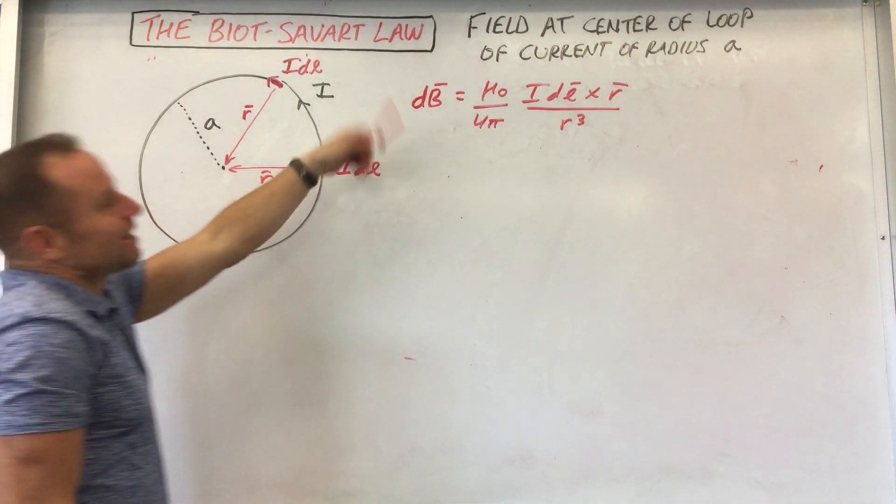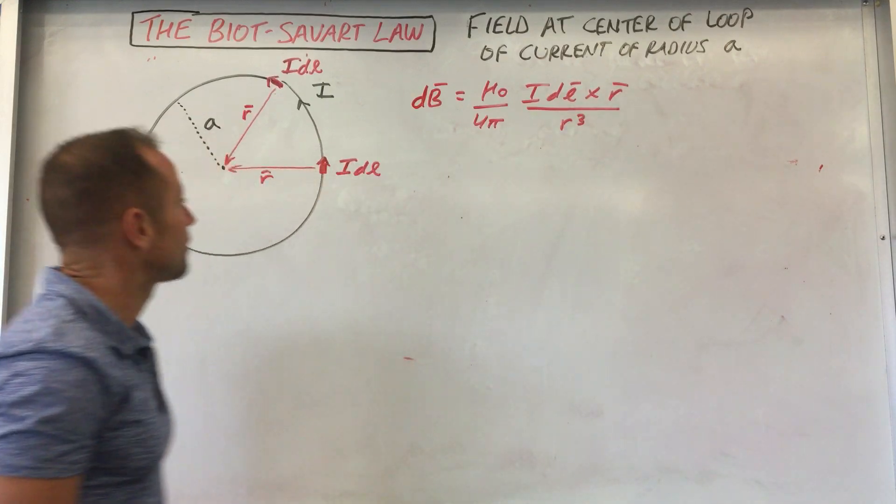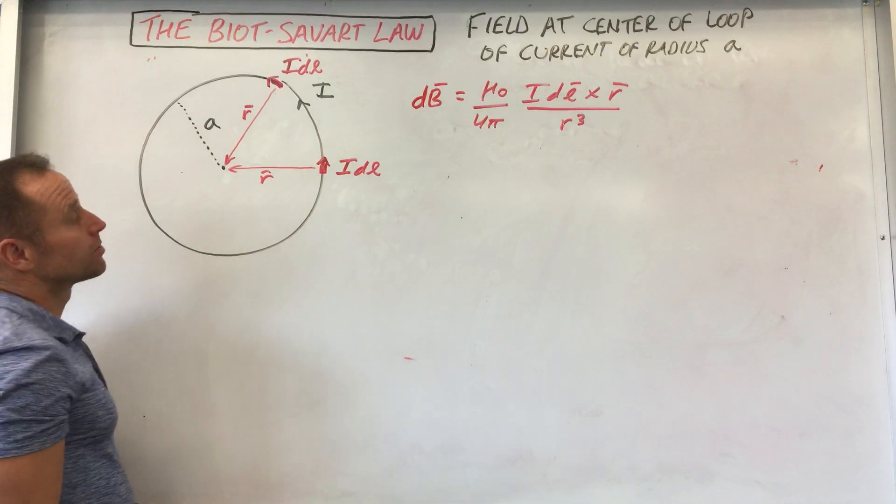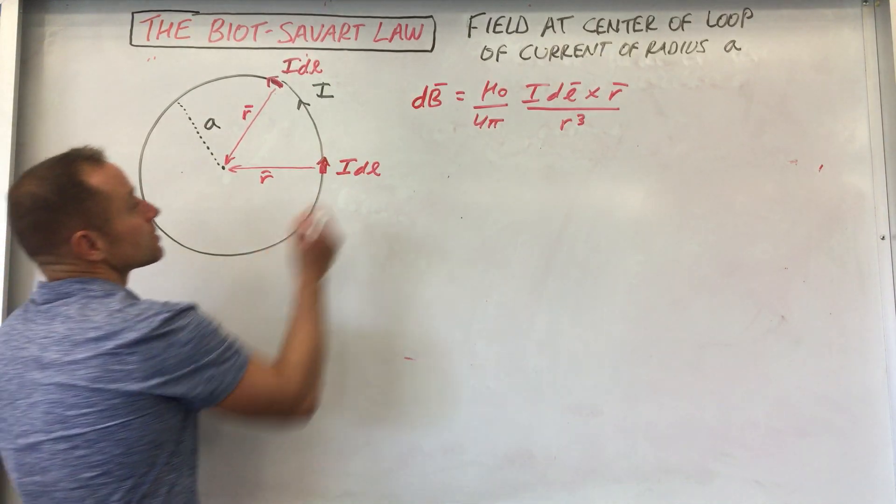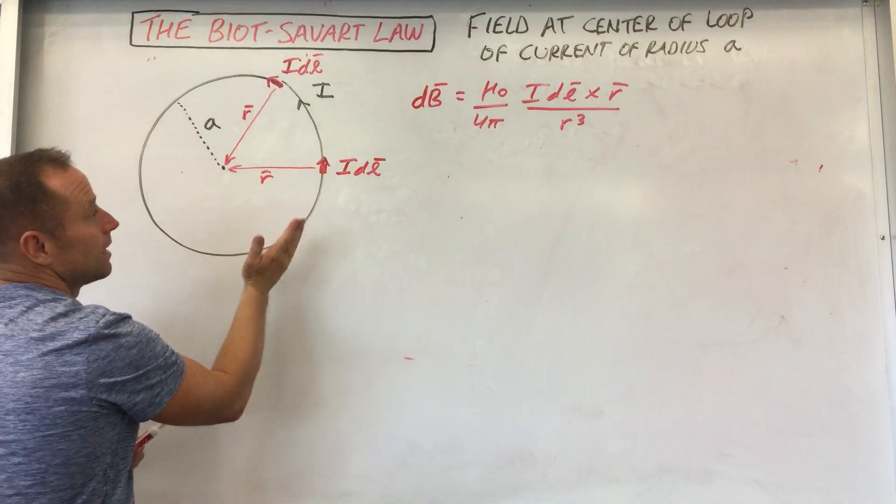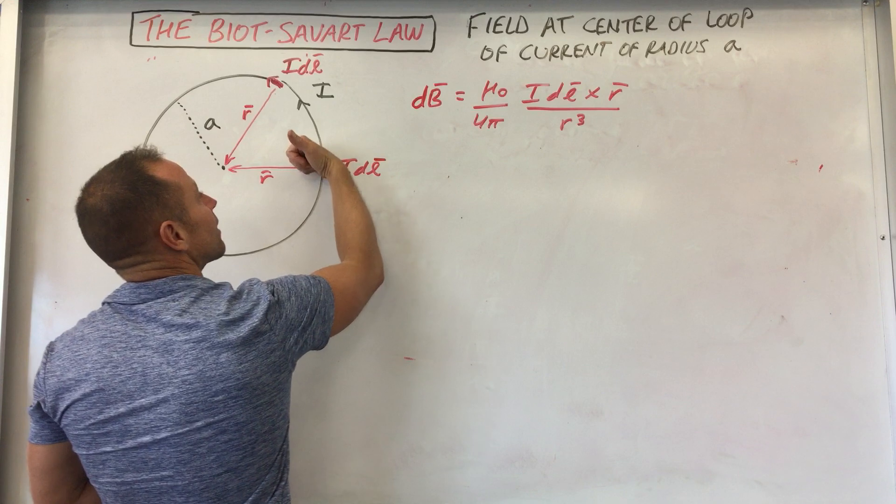So often, as is often the case with this, you can deal with this cross product often pretty quick. So notice that DL and R are always perpendicular to each other. So DL, for instance, points this way and R points this way. If you cross those vectors, DL folded into R is going to point out.